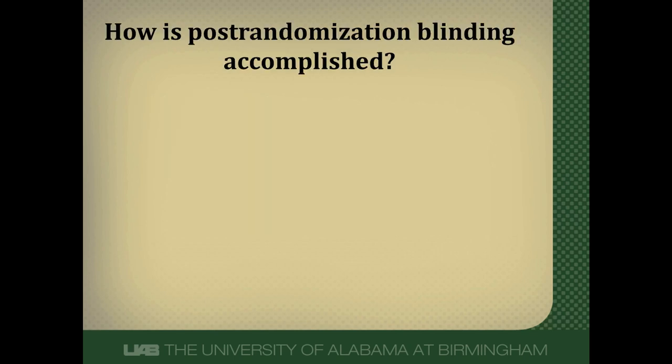How do we do blinding? Most commonly in a therapy-type study, it's done using a placebo. A placebo is essentially a sugar tablet — a pill that looks the same, smells the same, tastes the same, and feels the same, except it doesn't have an active ingredient. So patients and people involved in the study couldn't look at an active pill and a placebo and tell which one is which.